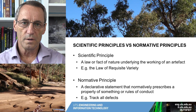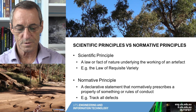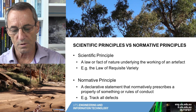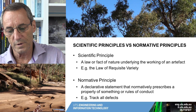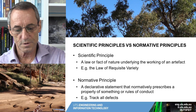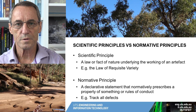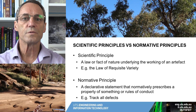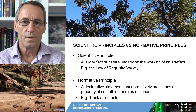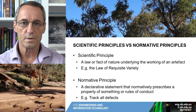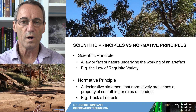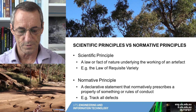Now, there are different varieties of principles. The scientific principle, for example, is a law or fact of nature underlying the working of an artifact — for example, the law of requisite variety. Somebody has observed nature and deduced that there is a principle that can describe how it works. So that's the scientific principle — it's derived from observation of the world.